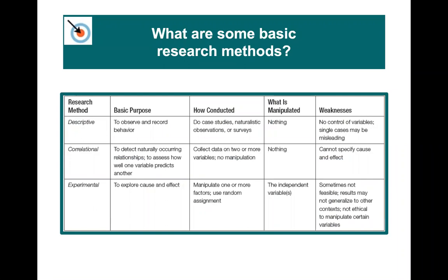In a correlational study, you collect data on two variables without manipulating anything, but you can't specify cause and effect because correlation does not equal causation. An experimental method is used to explore cause and effect — you manipulate one or more factors using random assignment, with an independent variable manipulated and a control group that doesn't receive it. Sometimes it's not feasible or ethical to give one group a treatment and withhold it from another, so you must use other methods and be careful not to claim causation.